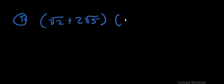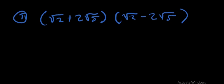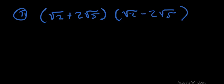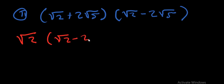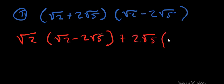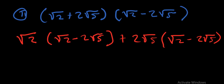The expression is (√2 + 2√5)(√2 − 2√5). This looks like a difference of two squares, but we'll expand it directly. We multiply √2 by everything in the bracket, then 2√5 by everything in the bracket: √2·(√2 − 2√5) + 2√5·(√2 − 2√5).